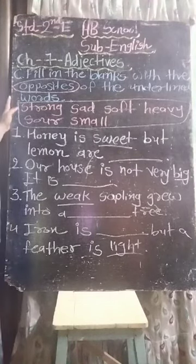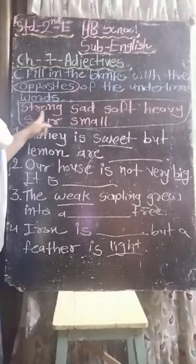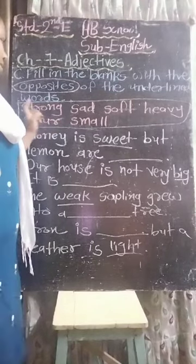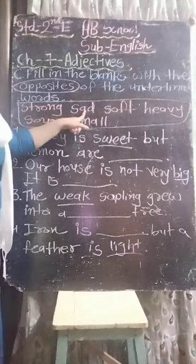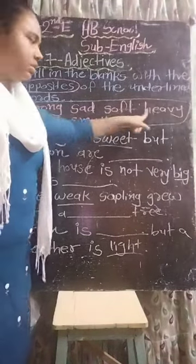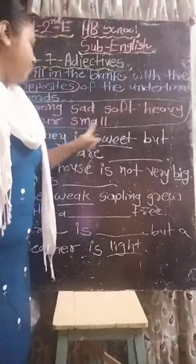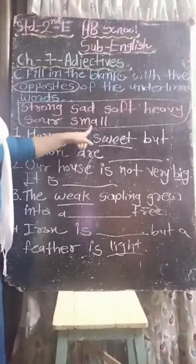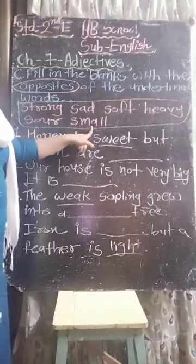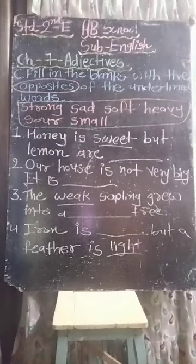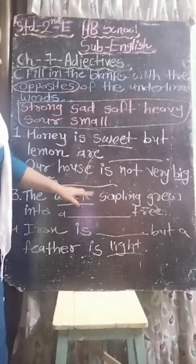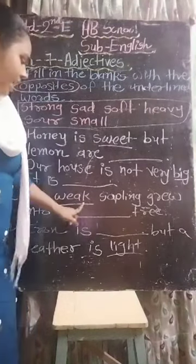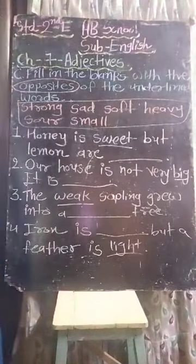You have to find out answers from this box. See: strong, sad, soft, heavy, sore and small. आपको ये जो underlined word है, वहाँ पर क्या लिखना है? उसका opposites लिखने है।